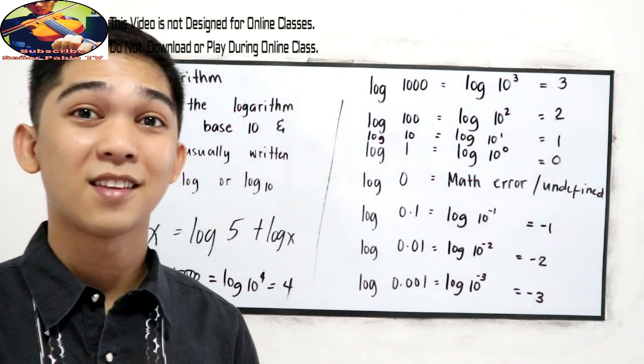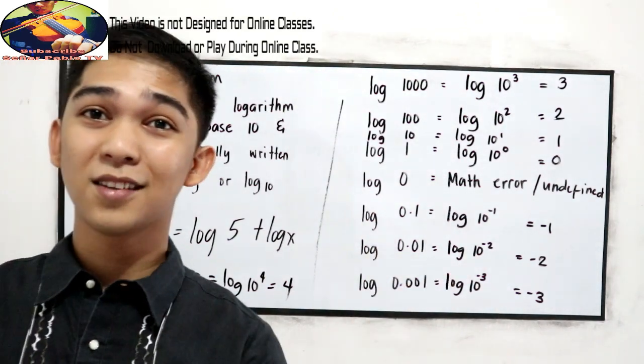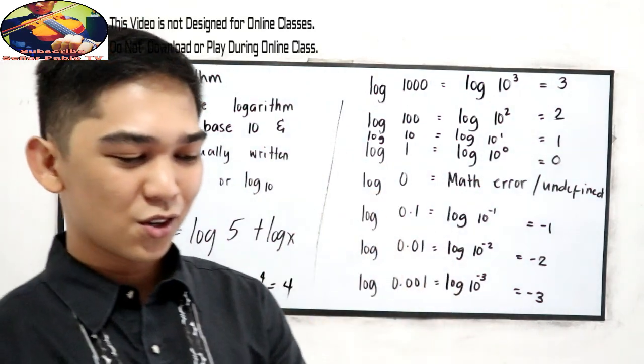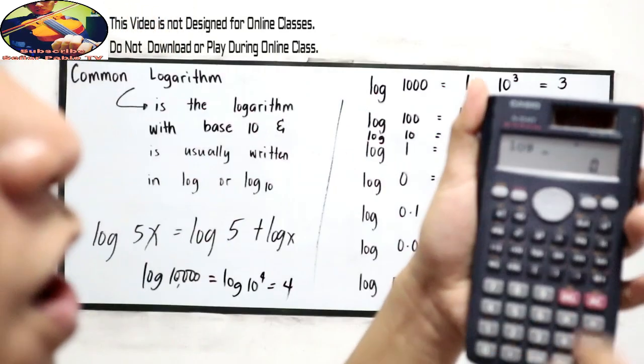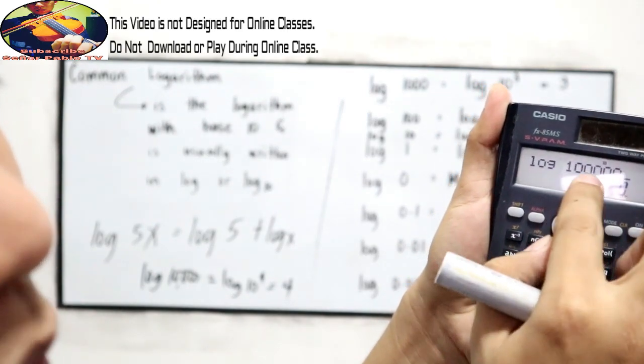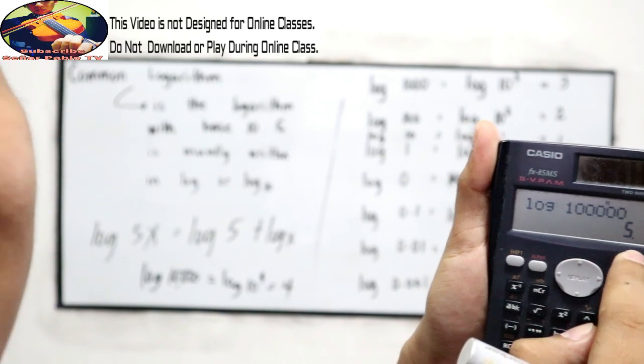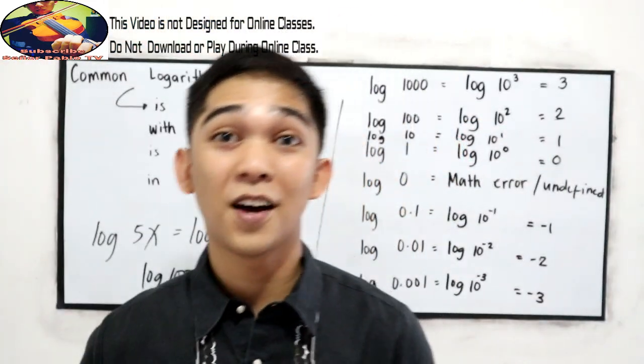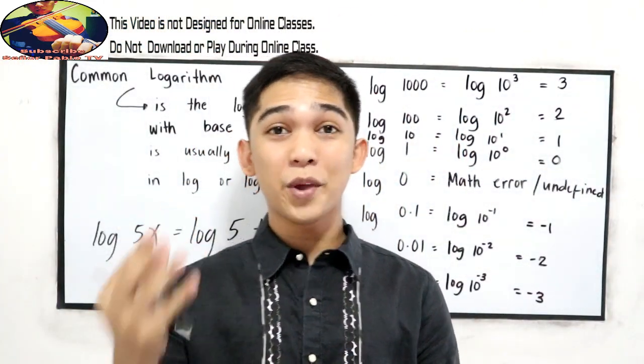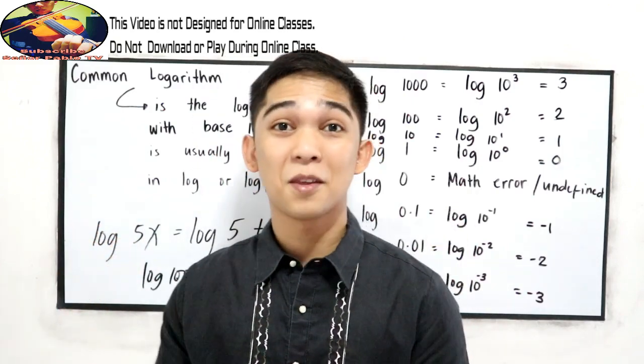Log 100,000, just count the number of zeros. 100,000, we have 5 zeros. So log 100,000 is equal to 5. That is the advantage of knowing the basic rules in mathematics.